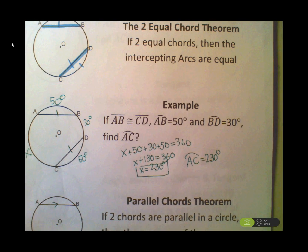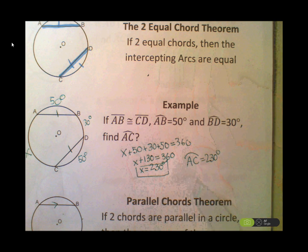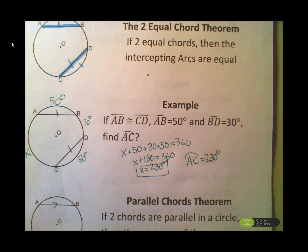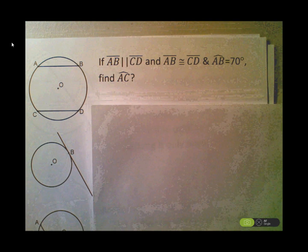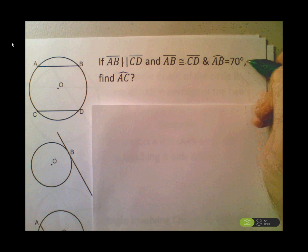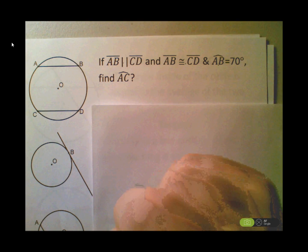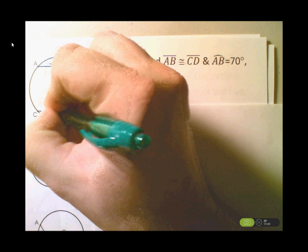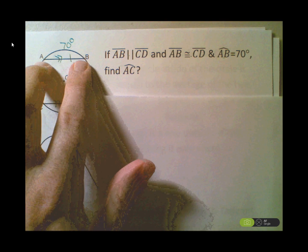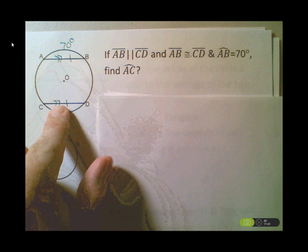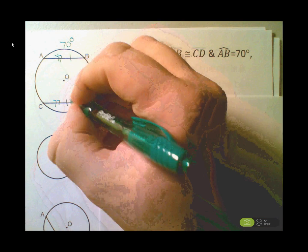Now let's do one more example combining the Two Equal Chord Theorem and the Parallel Chord Theorem. AB is parallel to CD and AB is congruent to CD. Arc AB is equal to 70 degrees. Find arc AC. Since these are parallel and also equal chords, the arcs are equal. So arc CD must also be 70 degrees.